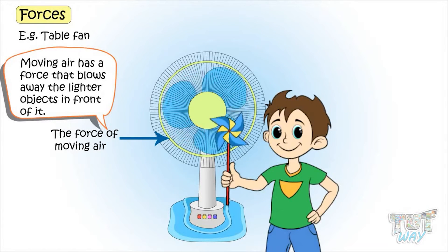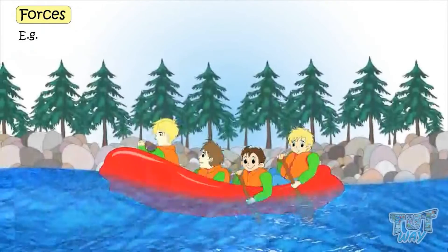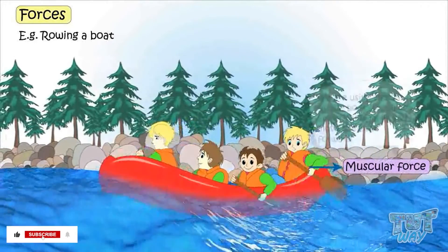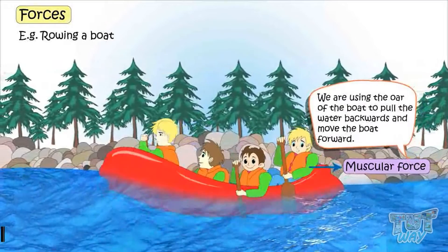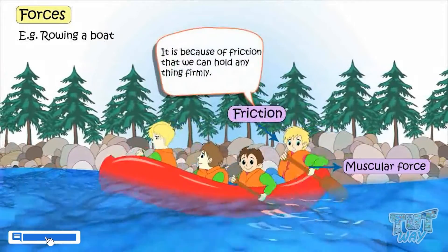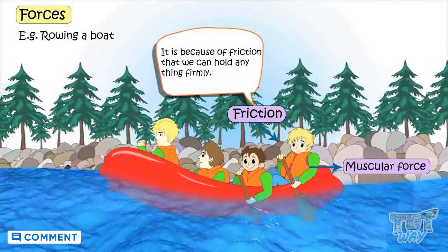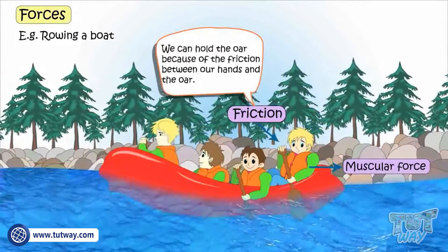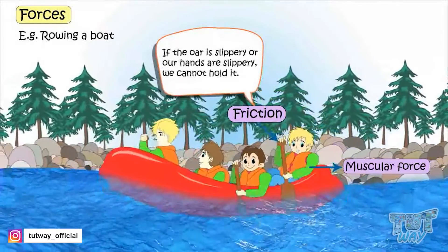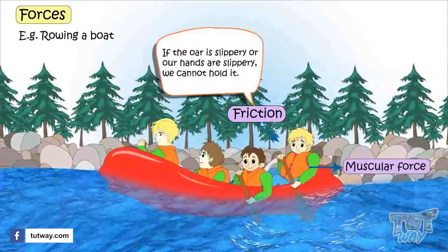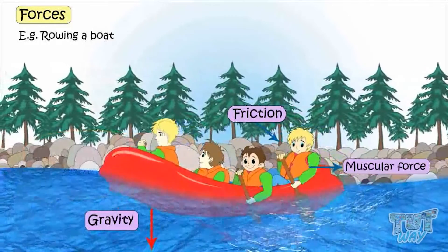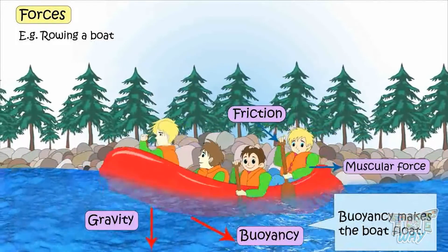Here are the forces acting while rowing a boat. Muscular force: we are using muscular force to move the oar of the boat, to pull the water backwards and move the boat forwards. Friction: it is because of friction that we can hold anything firmly. We can hold the oar because of the friction between our hands and the oar — if the oar or the hands are slippery, we cannot hold it. Gravity pulls the boat downwards. Buoyancy makes the boat float.